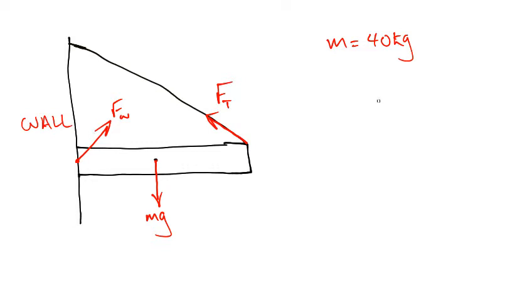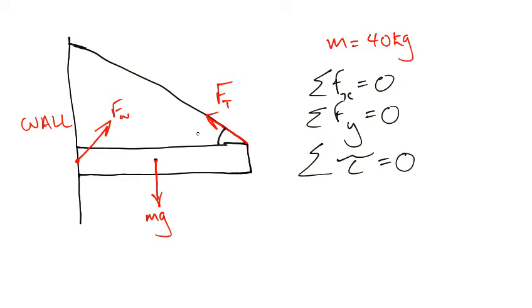So in order to do this, we're going to use our three equations. Summation of the forces in the x direction is 0. Summation of the forces in the y direction is 0. And summation of the torques equals 0 about a point which we will decide in a moment. There's one other piece of information that's given: this angle here is 42 degrees.